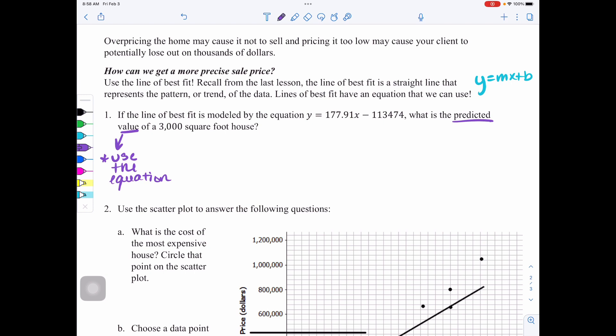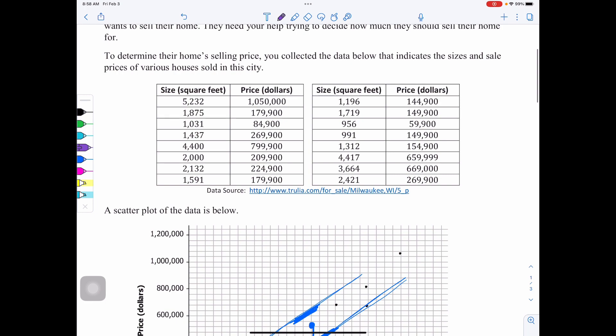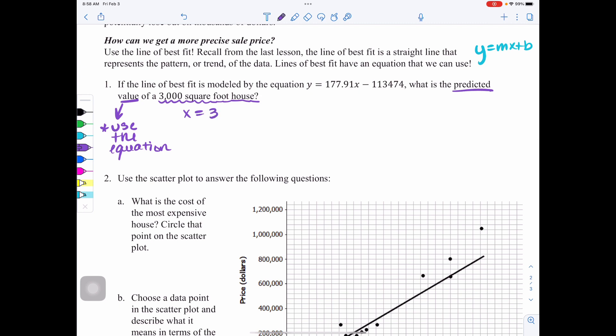If we wanted to know the actual data point, we would go back to the table and look at the table of values. Since we're going to predict, we're going to take our equation and we need to find it for a 3,000 square foot house. If you recall, if I go back, size is on the x-axis, it's on the left-hand side, this is an x variable. So that means they're telling me x equals 3,000. All we have to do is substitution. My equation is y equals 177.91, and where the x used to be, I'm now going to put 3,000 instead.